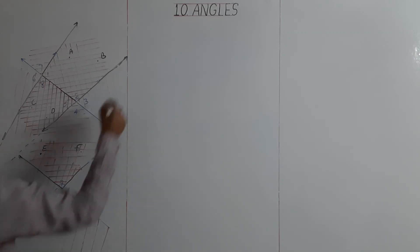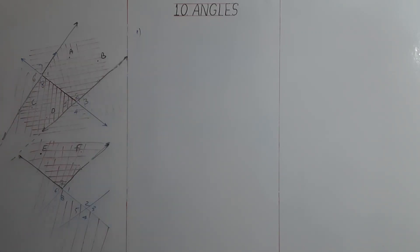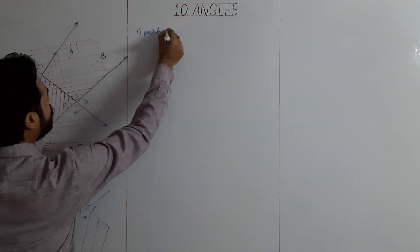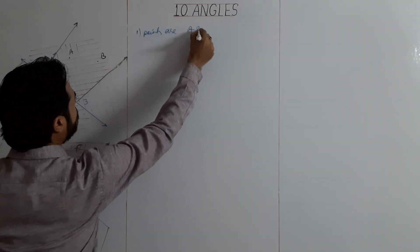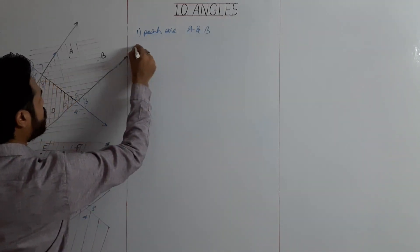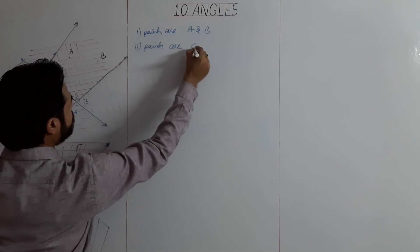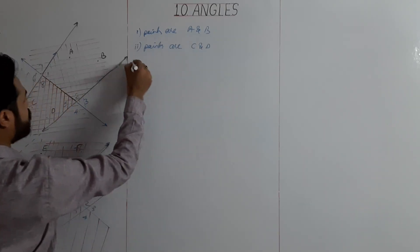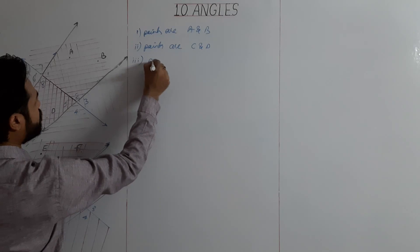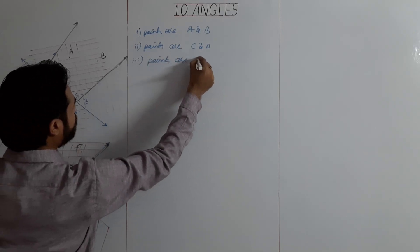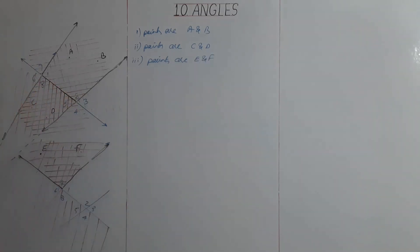So for question 3: first part, points are A and B; second part, points are C and D; third part, points are E and F. Next, Exercise 10.5.